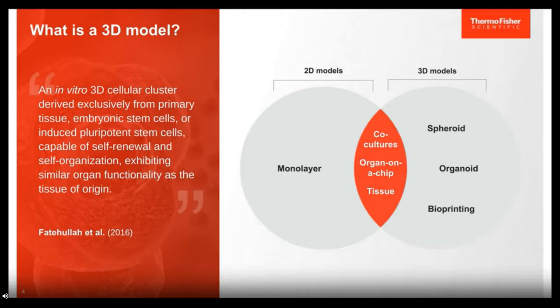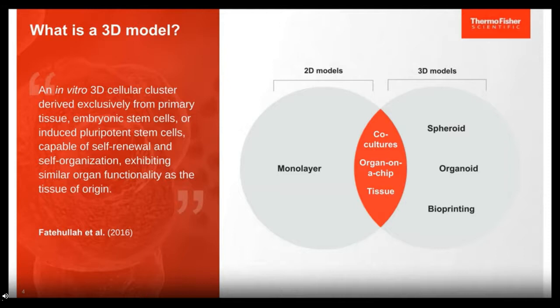Organ-on-a-chip modalities incorporate microfluidic systems that bring perfusion and flow capabilities to your 3D model. Complexity can also be increased when utilizing cells procured directly from tissues as opposed to immortalized cells, which are usually used for traditional 2D models. These tissue-derived cells can be used in either co-culture or a monolayer system. What we support here at Thermo Fisher, and the basis of this webinar, are 3D models — the self-aggregated models such as spheroids or organoids, or models constructed with a bioprinter where you have control over shape, cell deposition, and biomaterials.